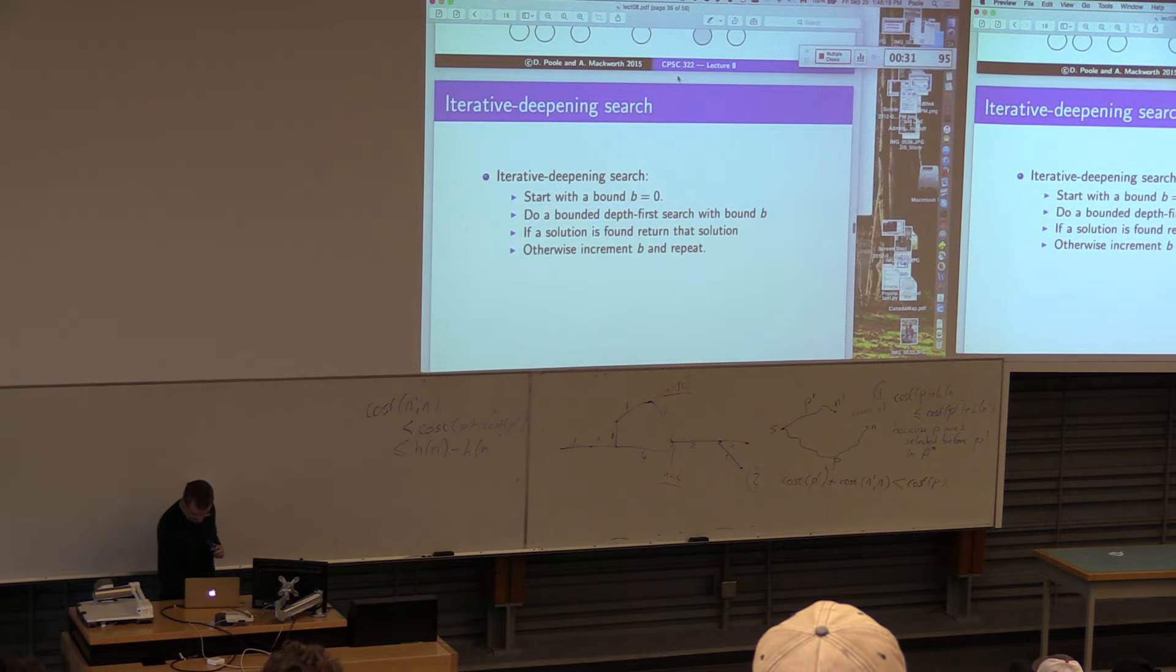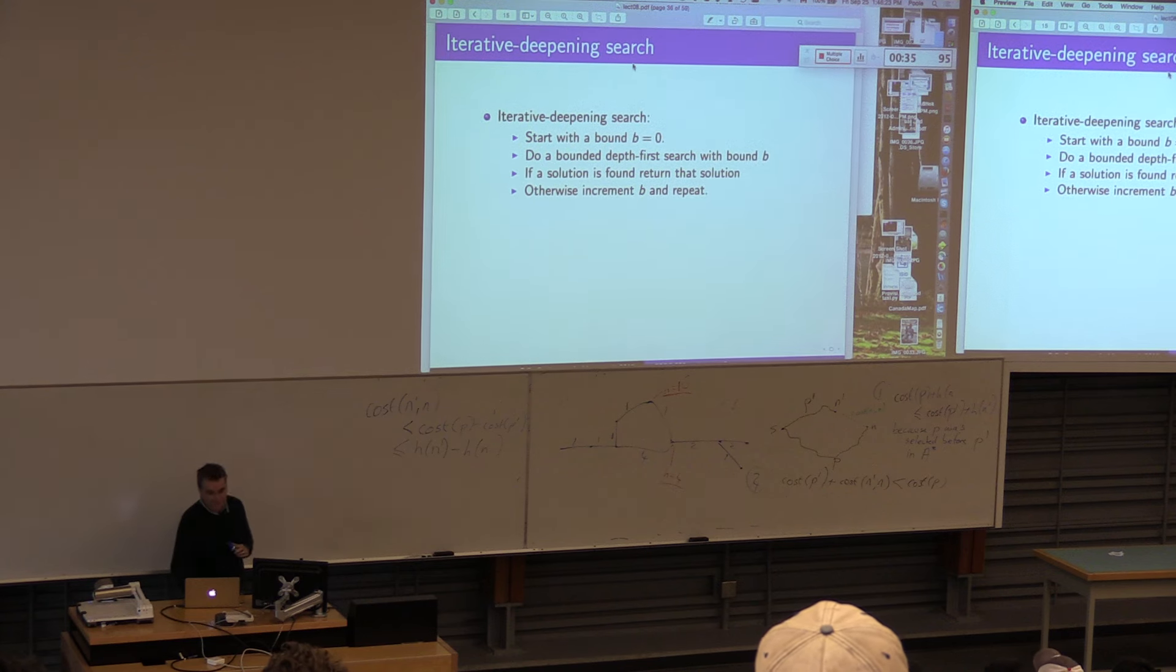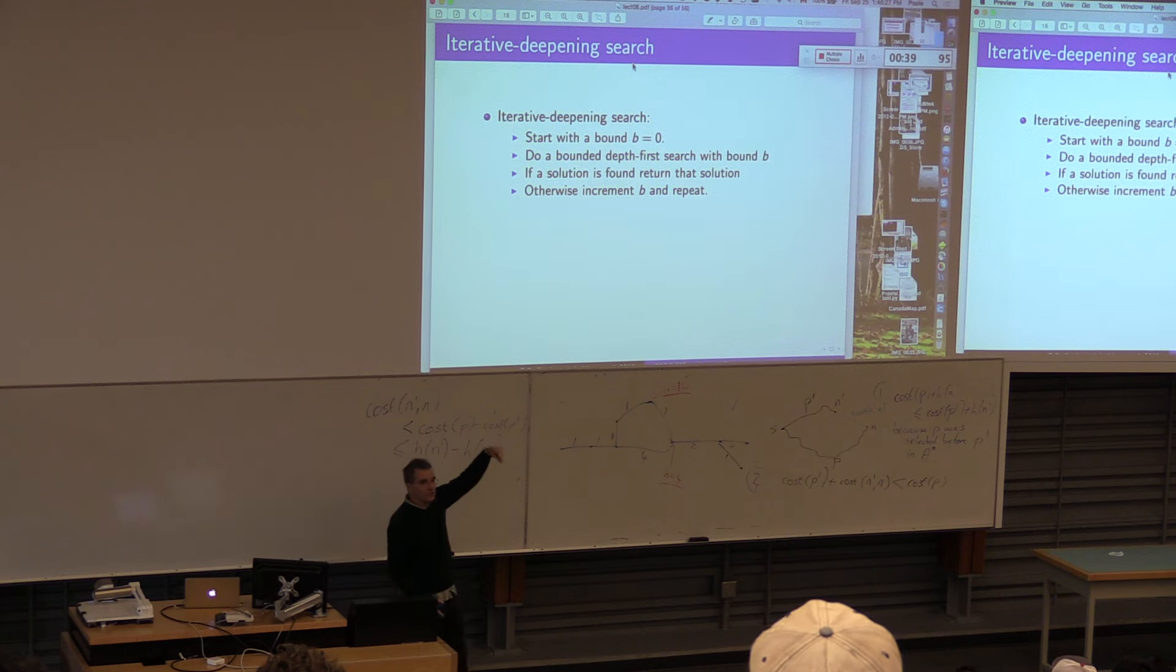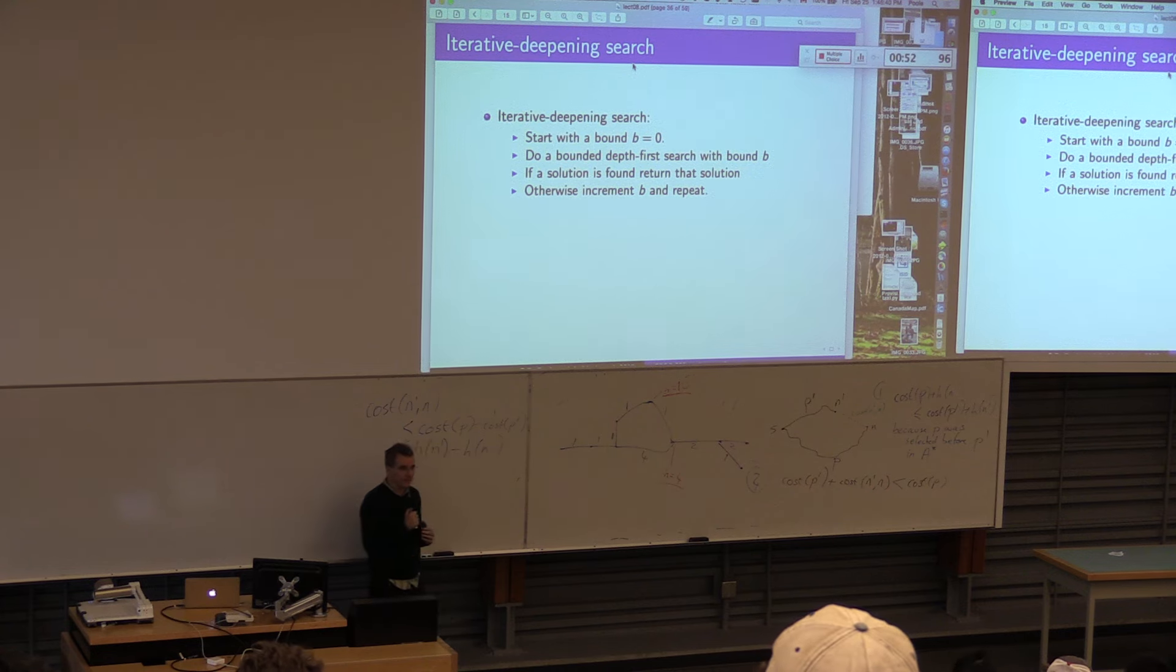So the question is, so effectively what we did by hand was this iterative deepening search. We're going to start with a bound of zero. So it's just going to check the path of things zero. Then we're going to do a bounded depth first search with bound B. If a solution's found, we're going to return that solution. Otherwise, we're going to increment B and repeat.